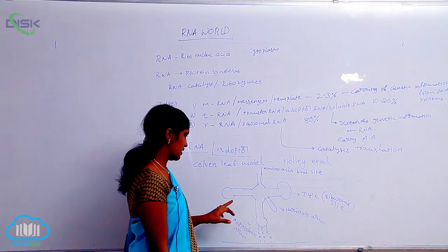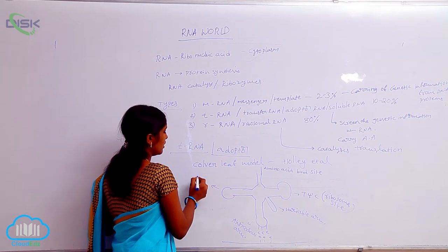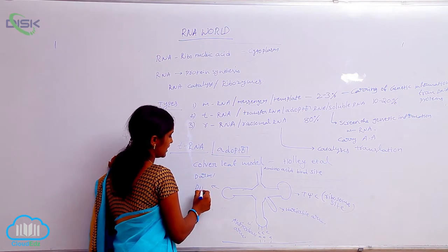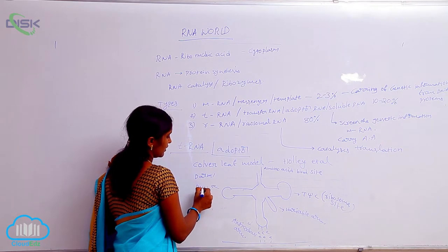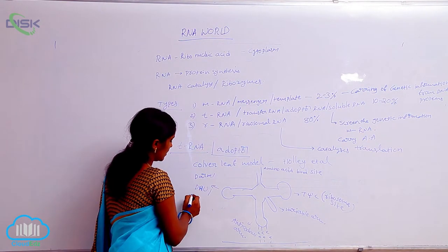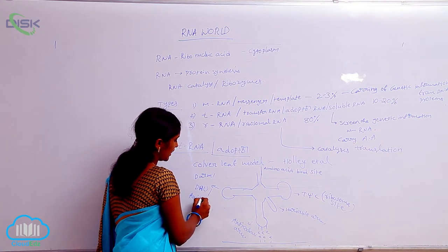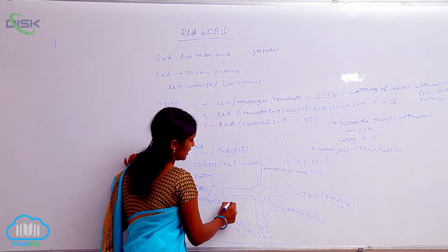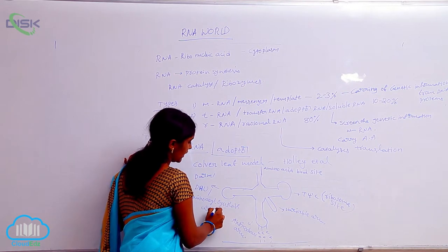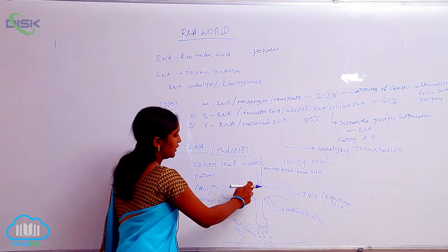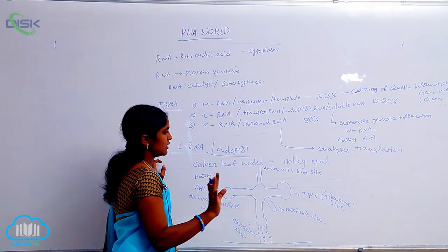And here D-arm is also present. D-H-U arm, also called dihydroxyuracil arm, also called aminoacyl synthetase arm. Many arms are present here. 1, 2, 3, 4, 5 arms are present here.